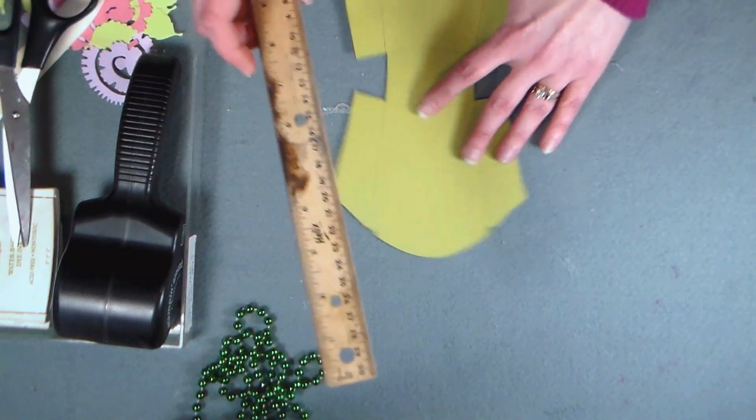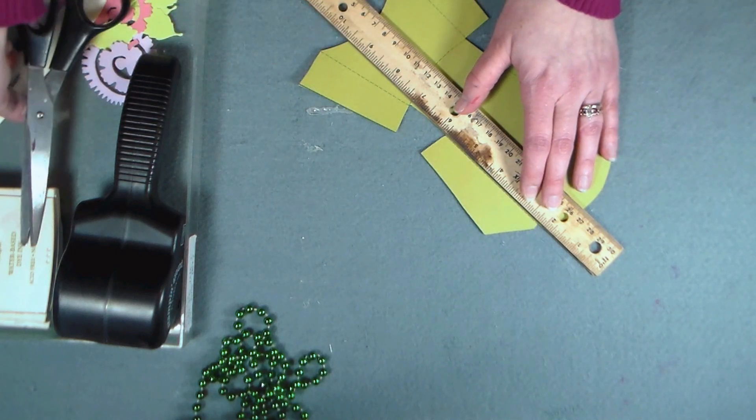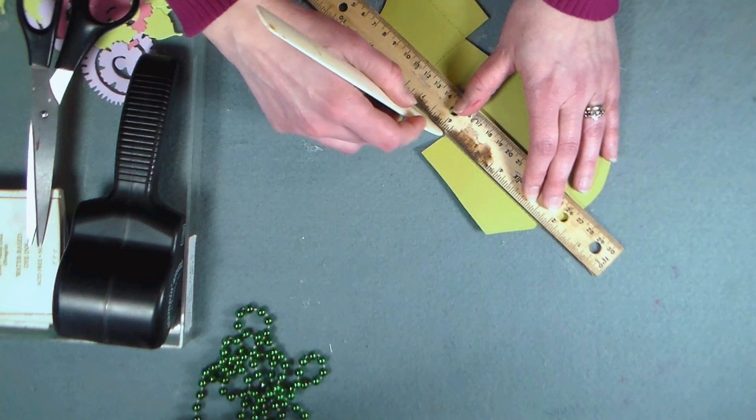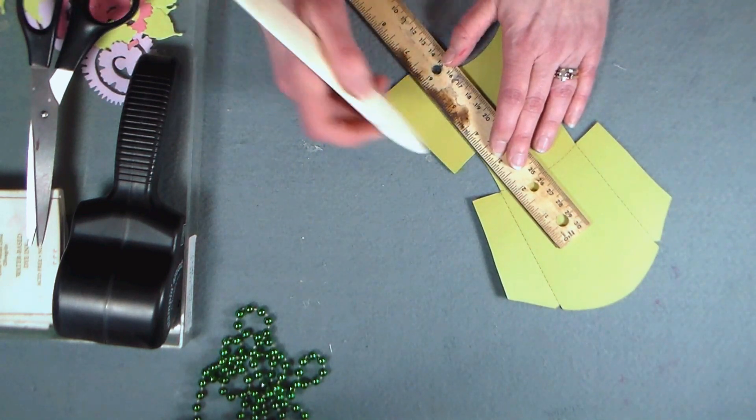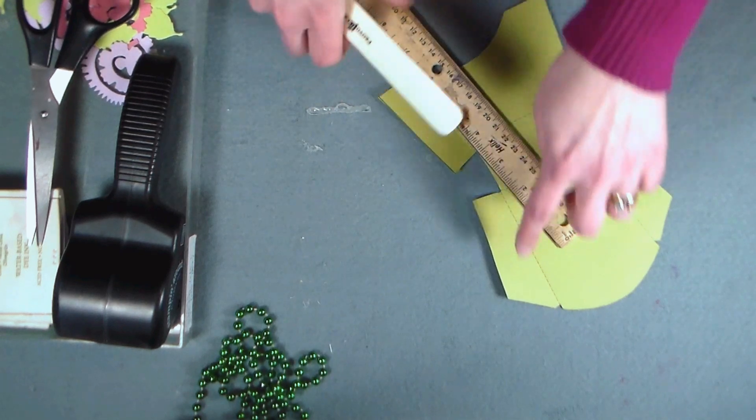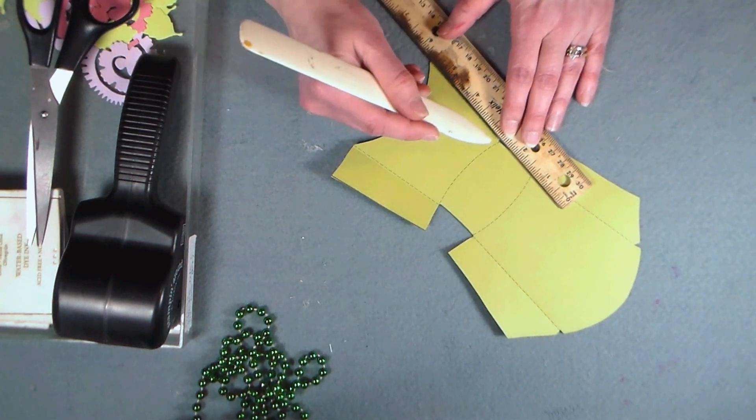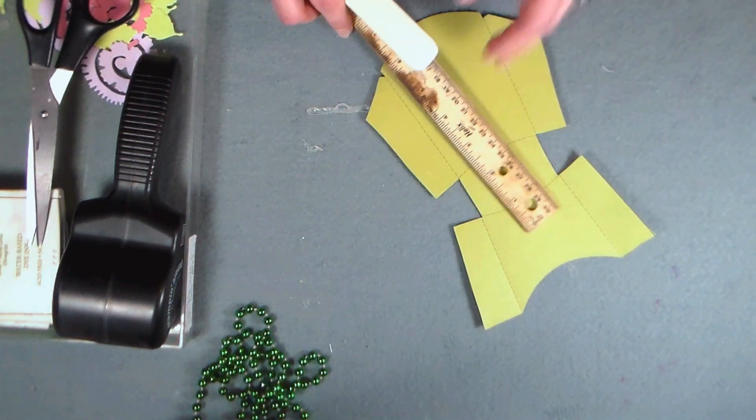Now after you cut it out, you're going to want to score the fold lines which are marked on the pattern, so make sure if you print it out that you have the score lines on the wrong side of your paper if you're using a paper that is prettier on one side. I'm using a bone folder and a ruler to score my straight lines. You can use a butter knife if you don't have a bone folder, that'll work just fine, or even an old dried out pen works great too.